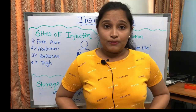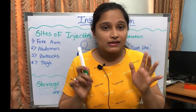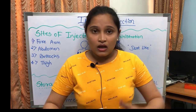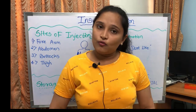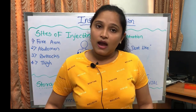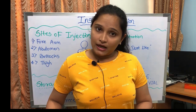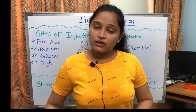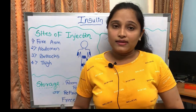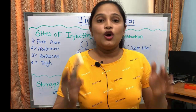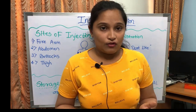In the abdomen, stay one centimeter away from the umbilicus area. Divide the abdomen into four sites and use each site of one anatomical region for one week, then move to the next site. This is done to prevent lipodystrophy.